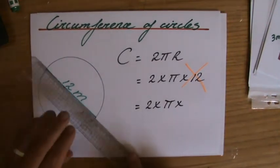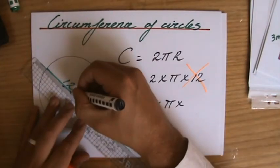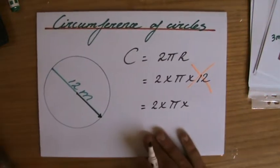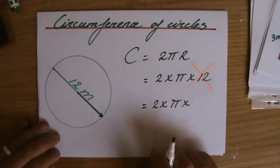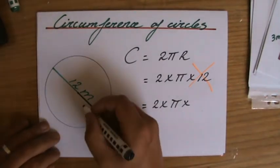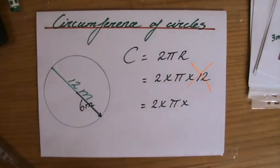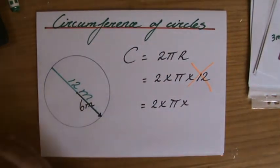radius is that line from the center of the circle to the circumference. So is that radius 12? No, that's diameter. The radius is 6, half the diameter. The radius is 6 meters - again, half the diameter.